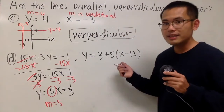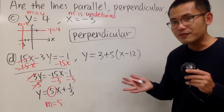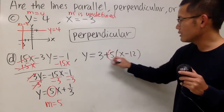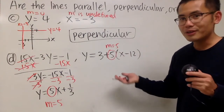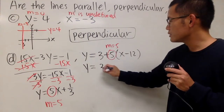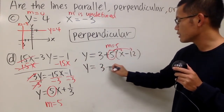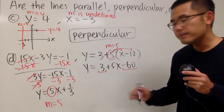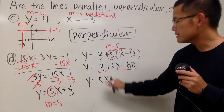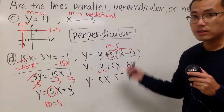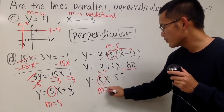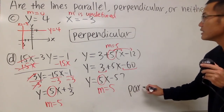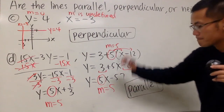The slope is 5. Now look at the other equation — it's in point-slope form, so the slope is also 5. If you work it out, you distribute to get 5x minus 60, then combine to get y equals 5x minus 57. The slope is still 5. The slopes are the same, so these lines are parallel.